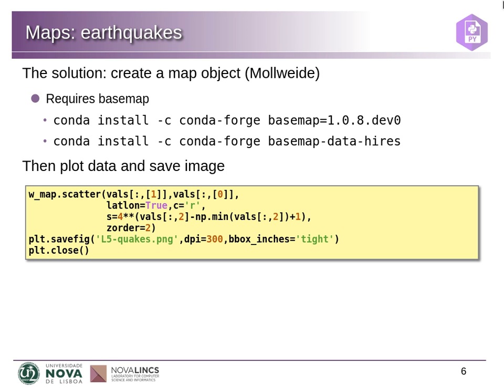I set the size of each point so that the magnitude — which is a logarithmic scale — is represented as 4 raised to the magnitude divided by the minimum value. This sets the scale for the size of each circle, which you can fine-tune. Then I save the figure. The z-order parameter lets you specify the drawing order of different series, so I set a higher order so the points appear on top of the continents and oceans.